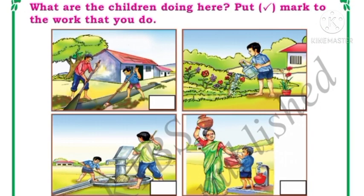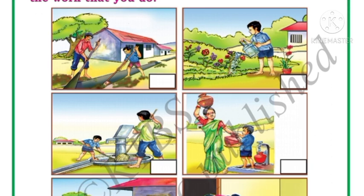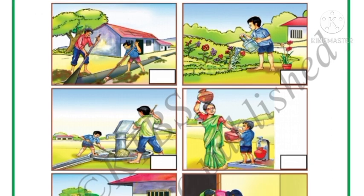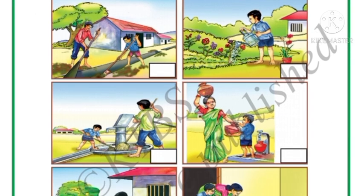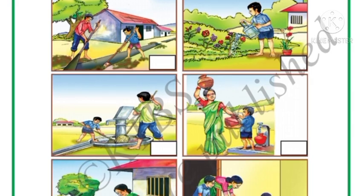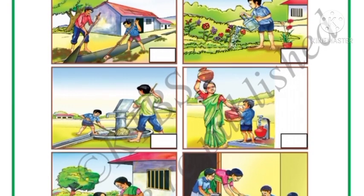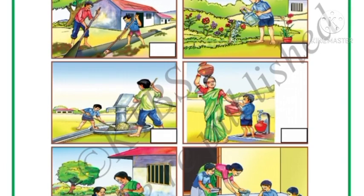Next, what are the children doing here? Put a right mark for the work that you do. In this picture you can see many works in which children are also helping. You have to put a right mark for which ones you help with. First one: sweeping the floor — if you sweep the floor, put a right mark. Watering the plant — if you water the plant, put a right mark.